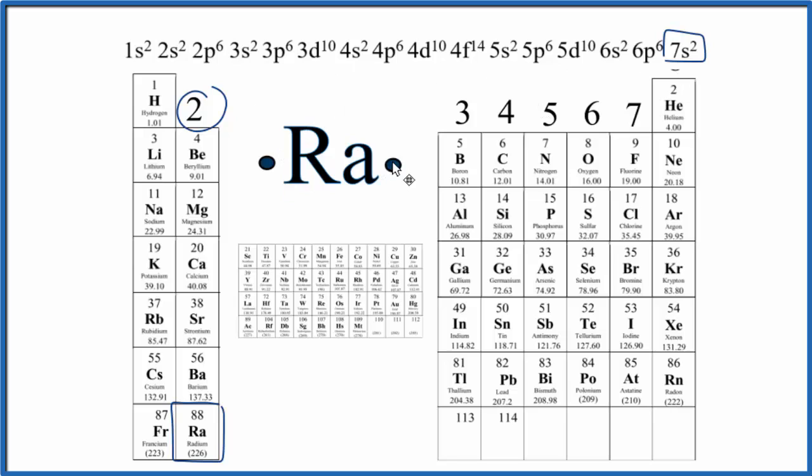You can see here why we started with putting two like this next to them in a pair, because these two electrons in the s orbital are together. Again, some teachers like you to split it up. Either way is correct, because radium has two valence electrons.